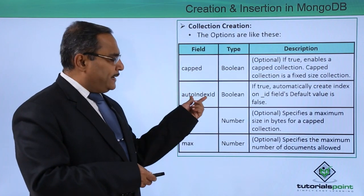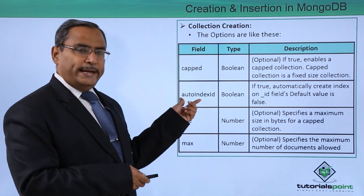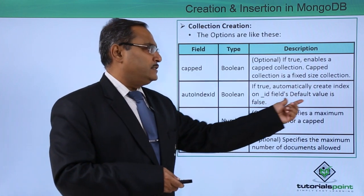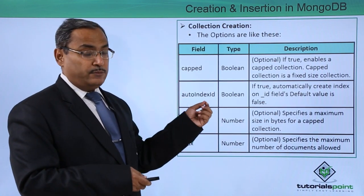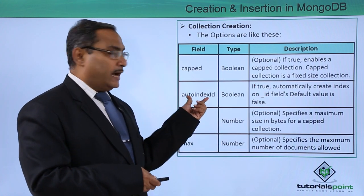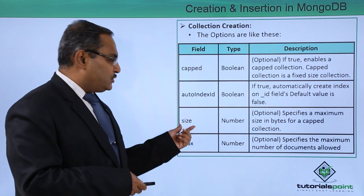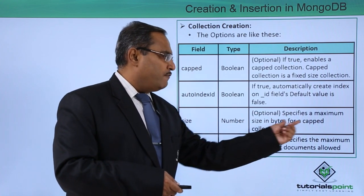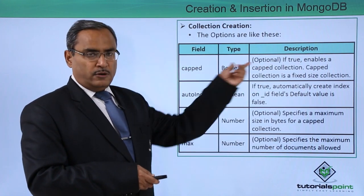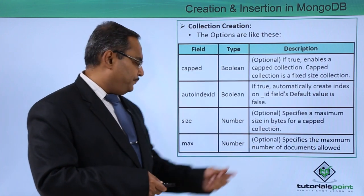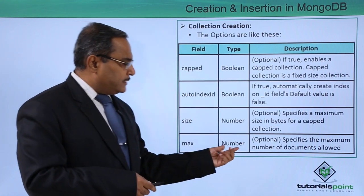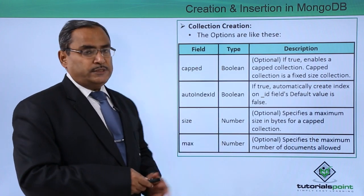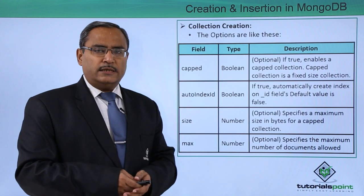The next option is autoIndexId, which is Boolean. If true, it automatically creates an index on the _id field; the default value is false. The size option is a number that specifies the maximum size in bytes for a capped collection, and it works when capped is true. The max option is a number that specifies the maximum number of documents allowed in the collection.